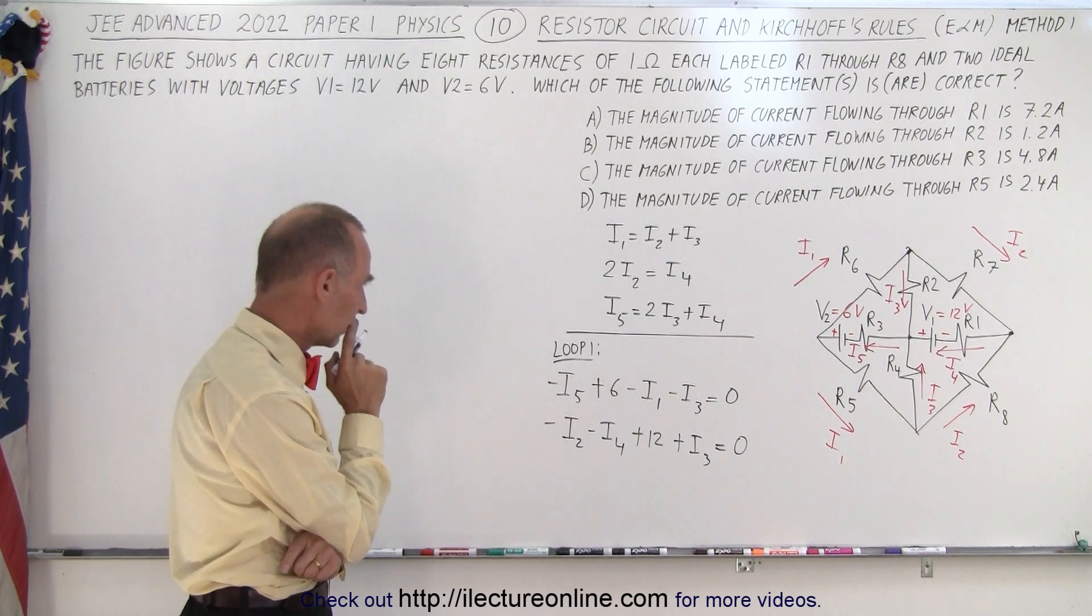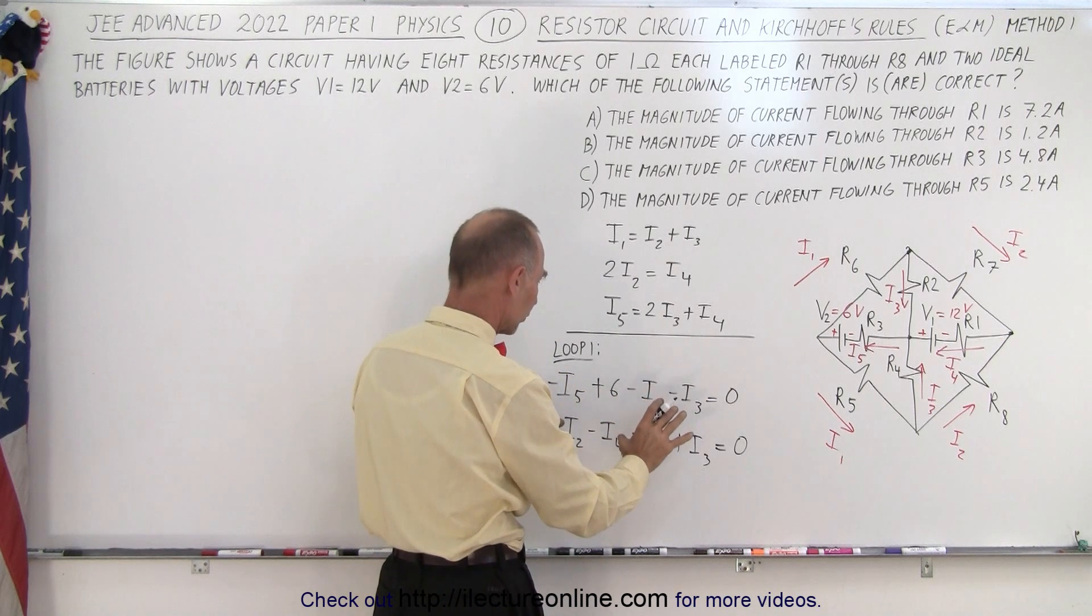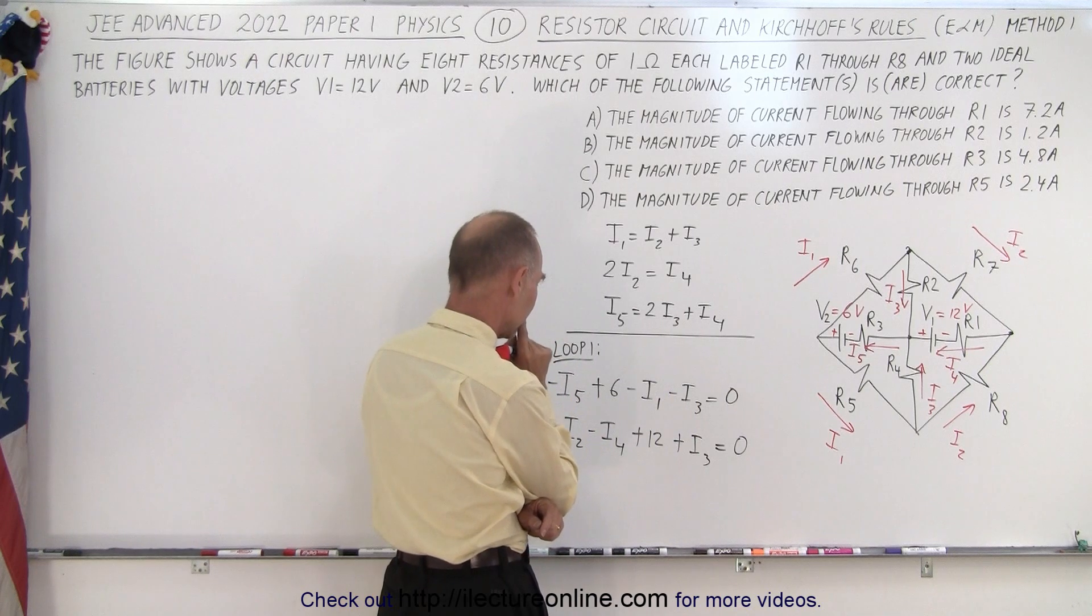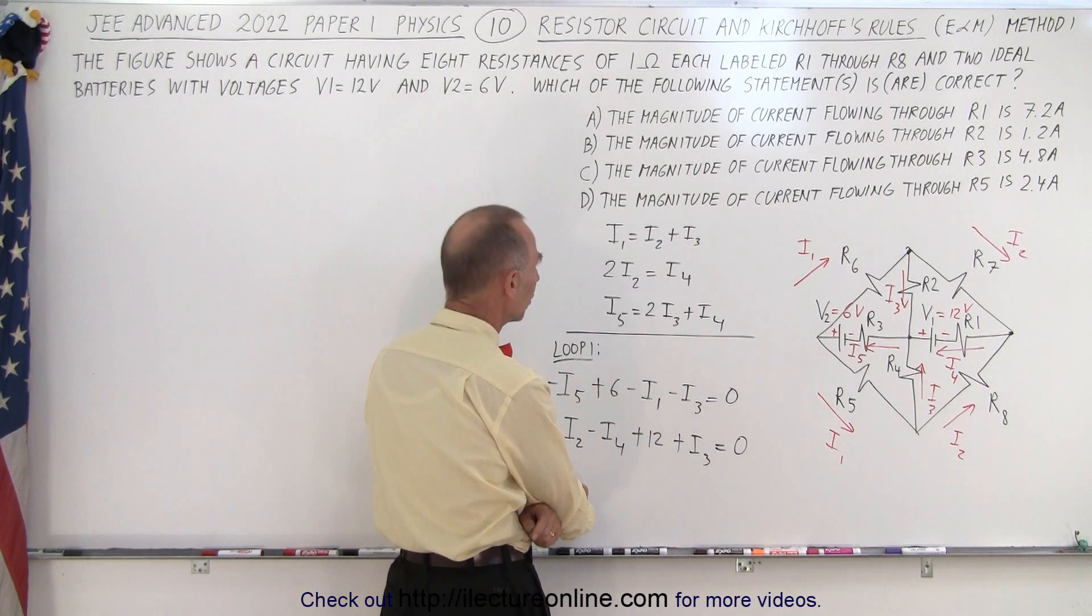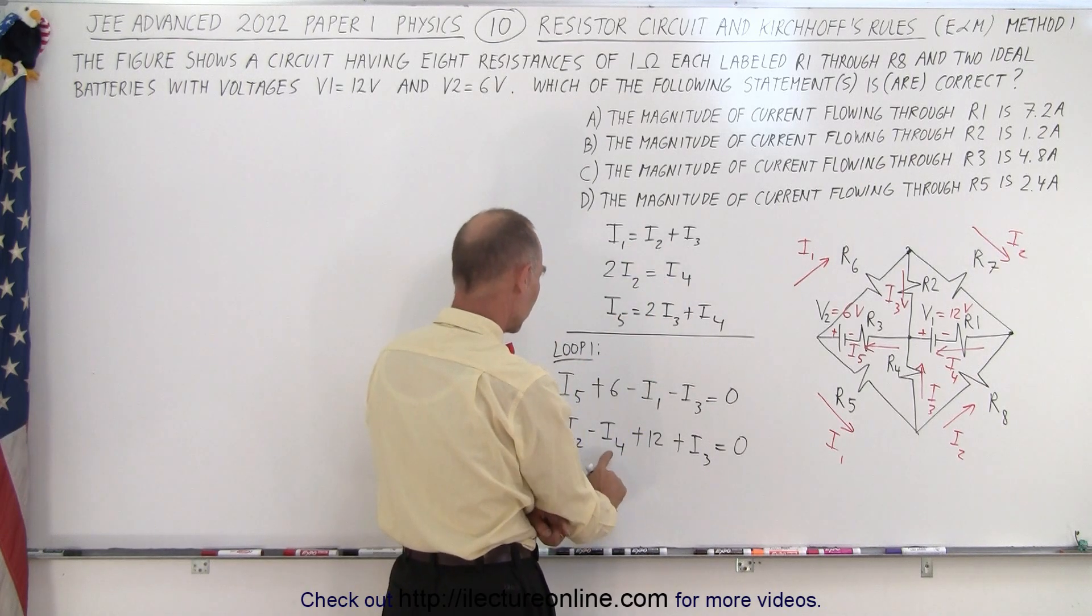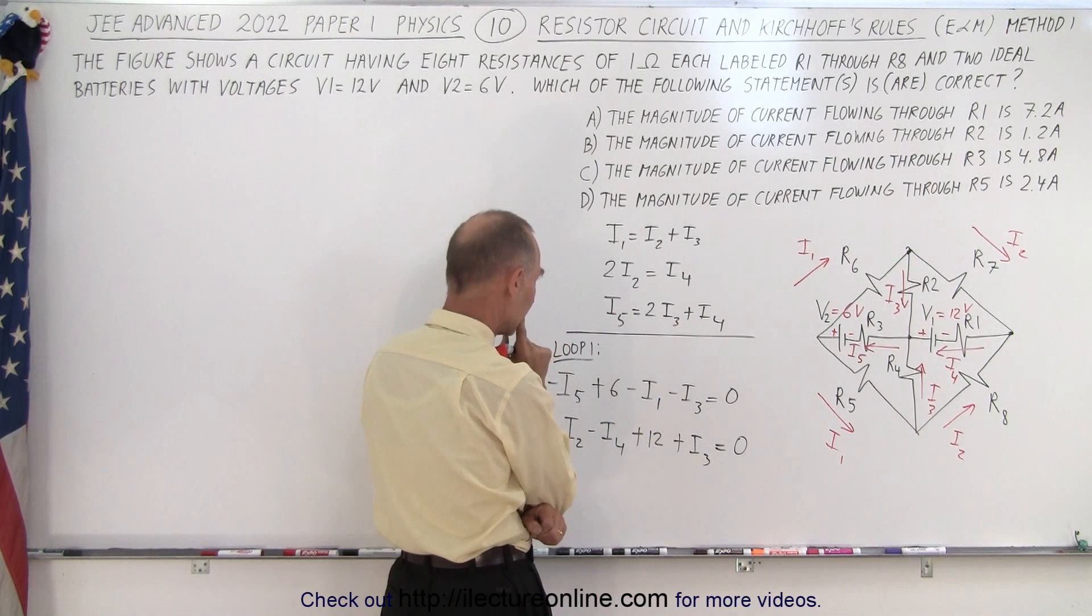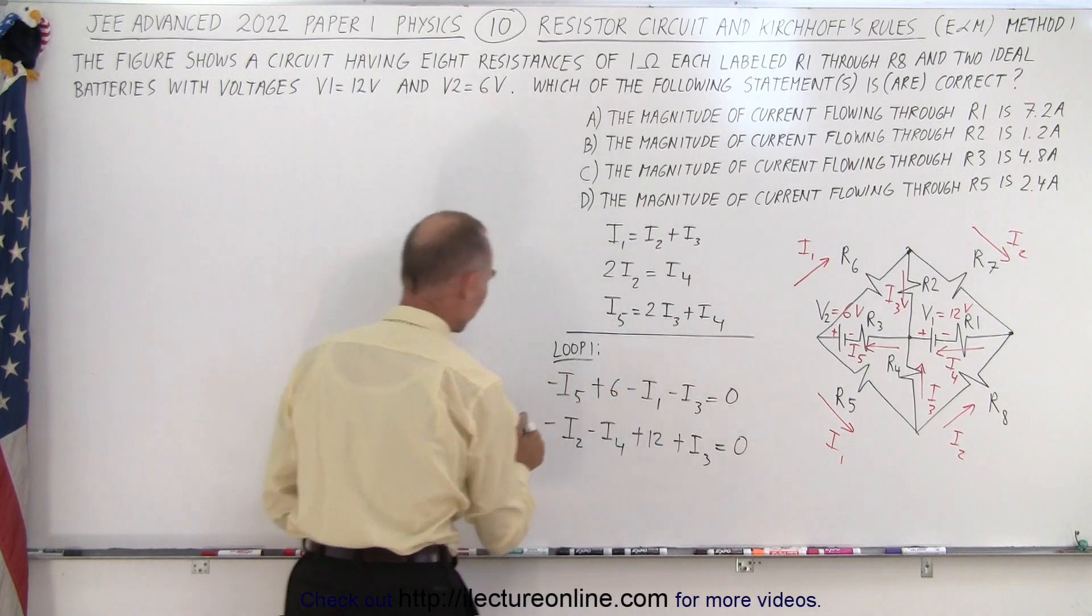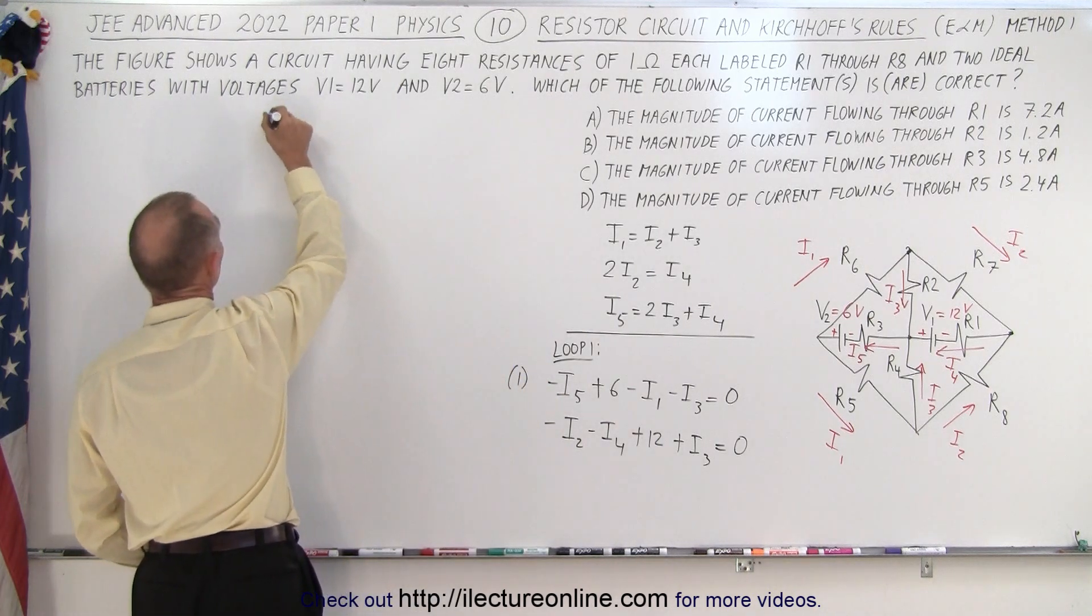So what we want to do is we want to get rid of some of these currents and replace them so that we only have two equations and two unknowns here. So we have I1 and I2. Could we get rid of I3? We could do that by using this equation. And we can get rid of I4 by using this equation. And I5, we can get rid of I5 as well. So that's what we're going to do. So this is equation number one. So we come up here, equation number one.